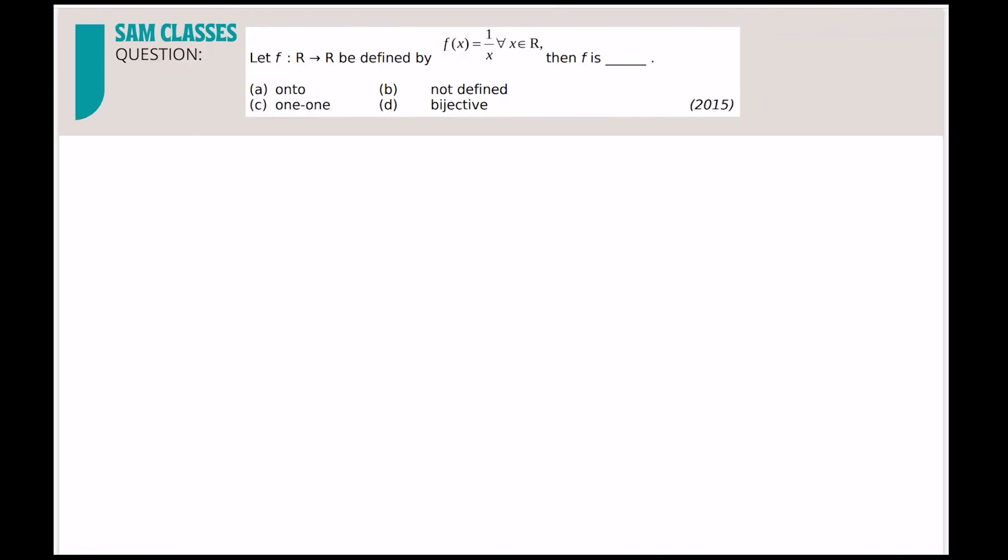Now if you see, this is basically f(x) = 1/x. Now we already know 1/x is a reciprocal function, not defined at zero because 1/0 is not defined. But it says it belongs to all real numbers, so directly we can say not defined. So a lot of times KCET gives questions like this.